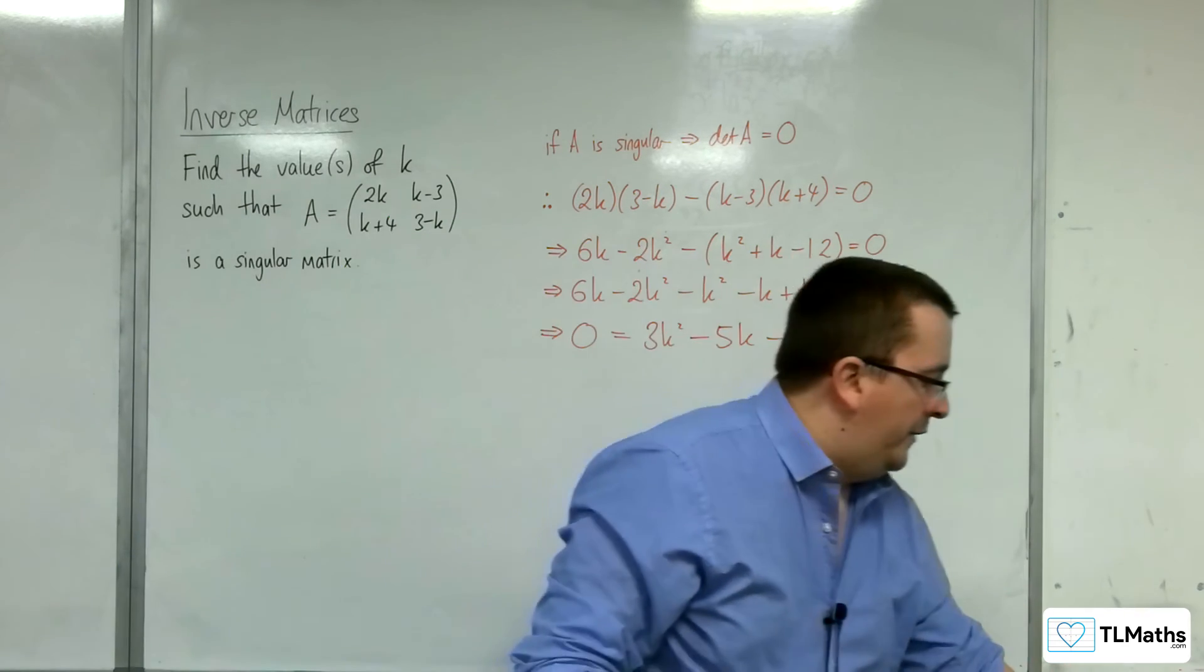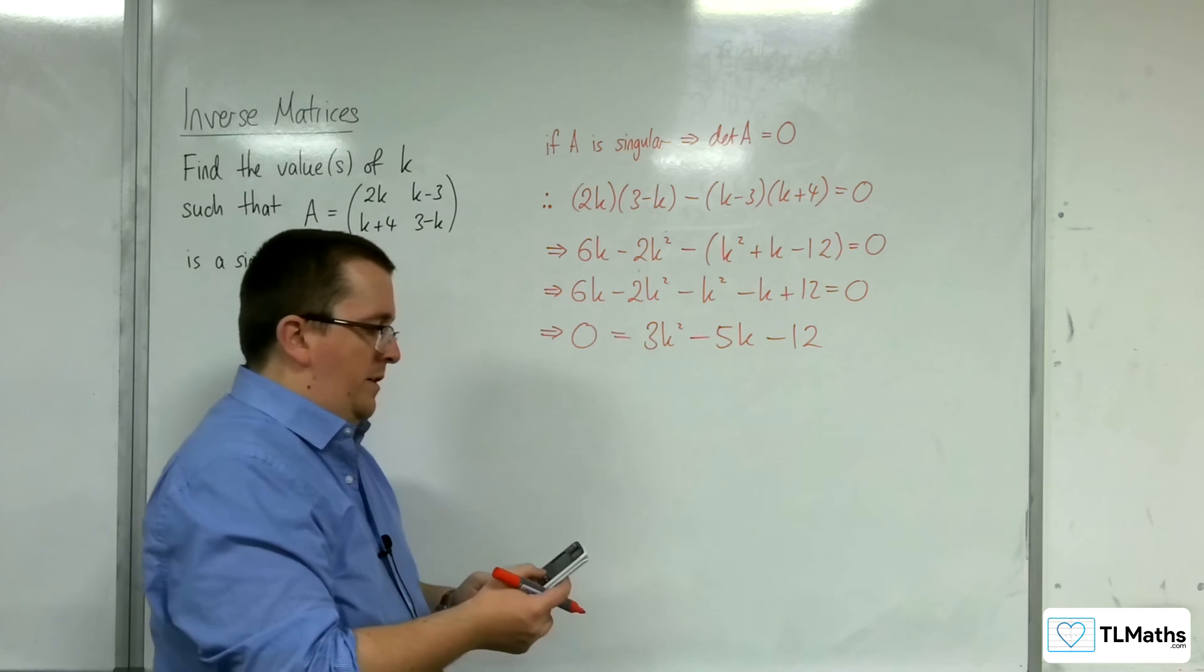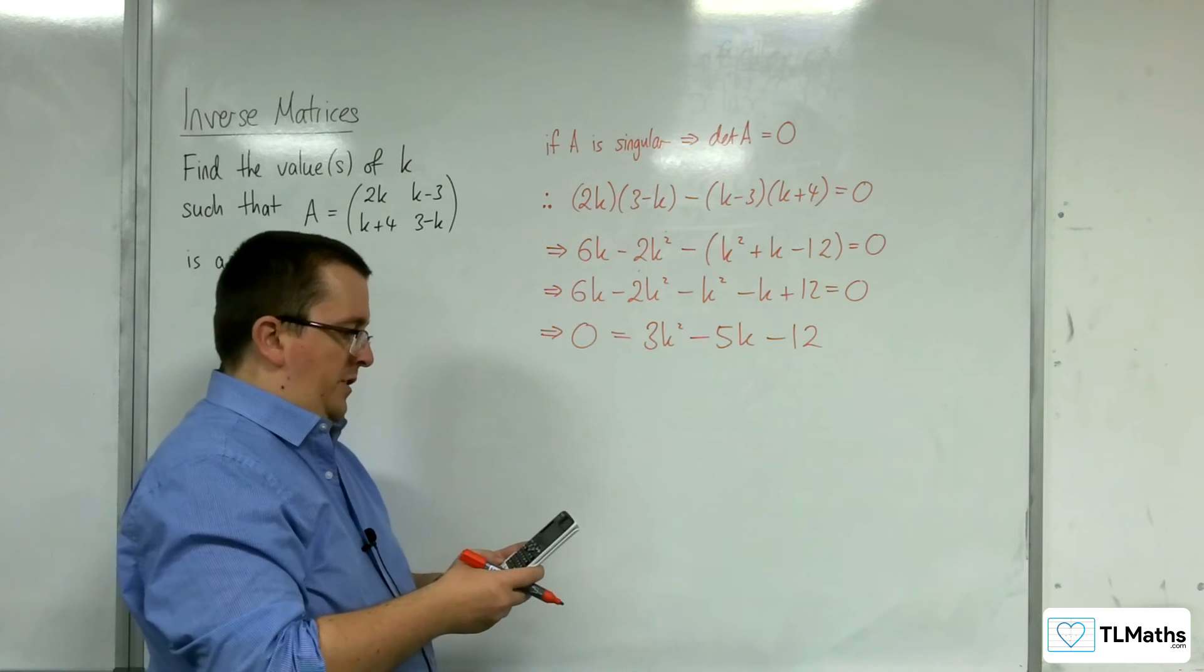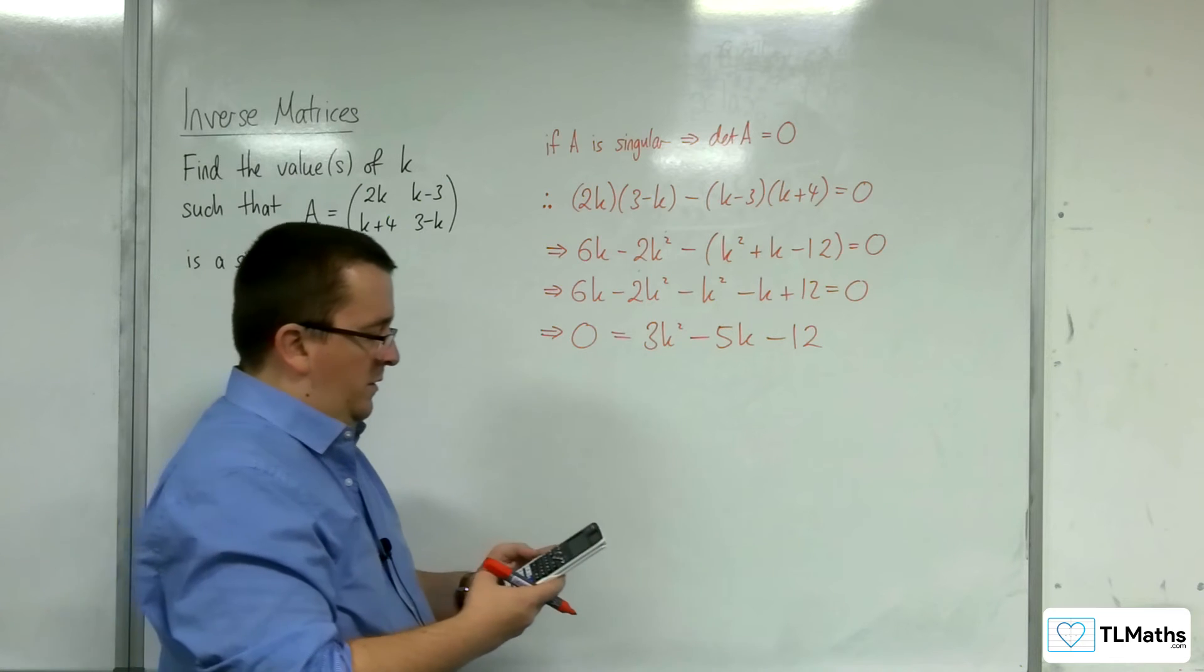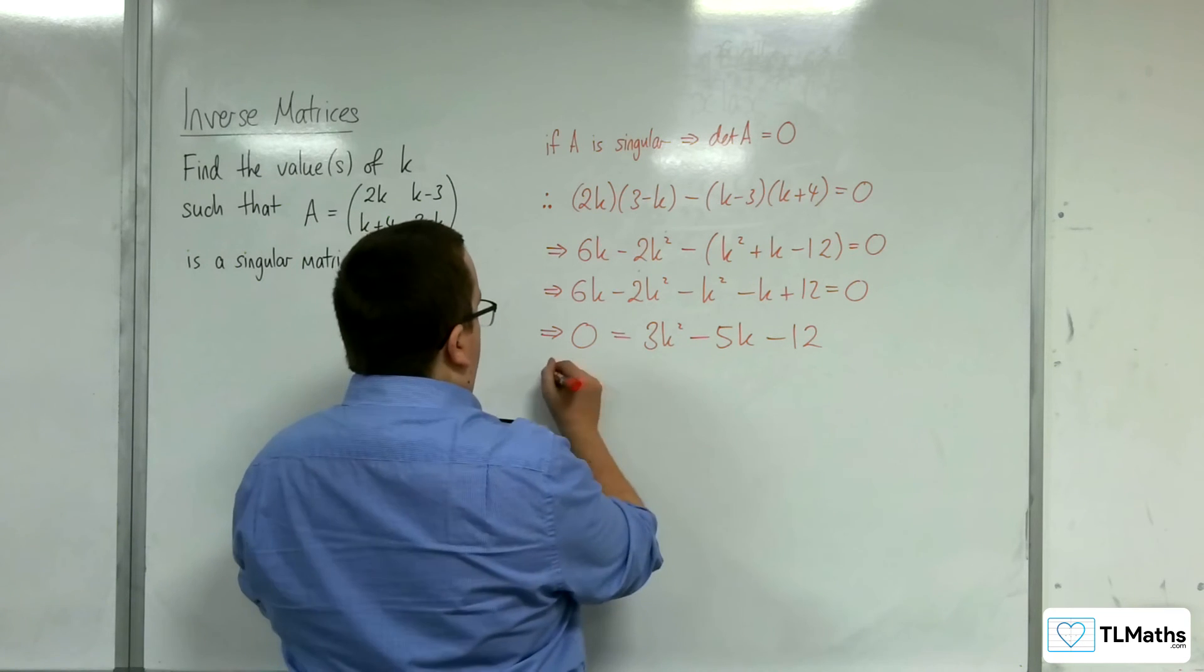Now let's solve this quadratic. Going to my calculator to solve that. So 3, negative 5, negative 12. Oh, it factorizes nicely.